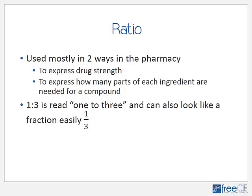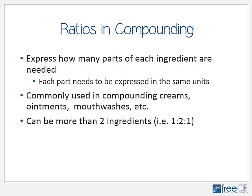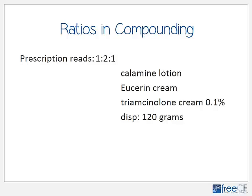Another way of expressing drug strength in pharmacy is with a ratio. Ratios are used two ways: to express drug strength, and to express how many parts of each ingredient are needed in a compound. A ratio like 1:3 is read 'one to three' and can look like the fraction 1/3. In compounding, each part must be expressed in the same units.